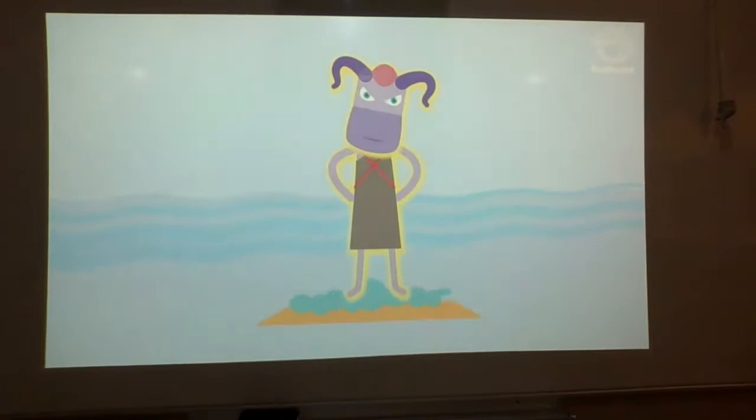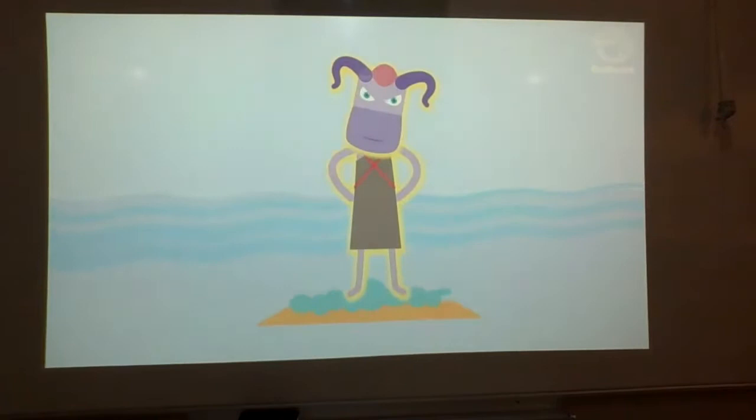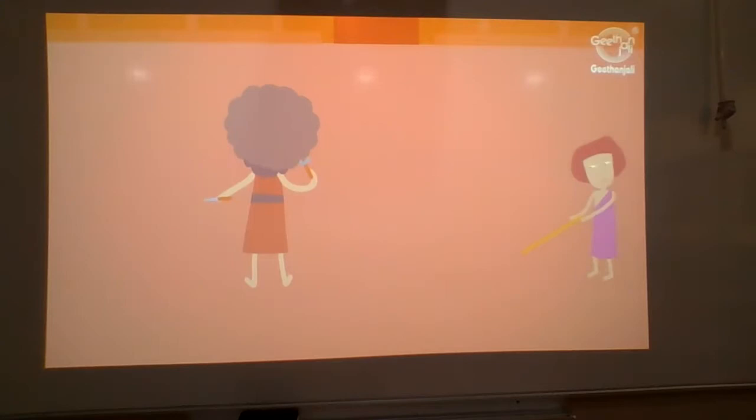A Minotaur was a monstrous creature who was half man and half bull. Daedalus worked day and night along with his son to build the Labyrinth. He made it so complicated that anyone who entered the maze would get lost for eternity. He was such a fine architect. When the labyrinth was ready, the king was amazed at Daedalus' skills and rewarded him.